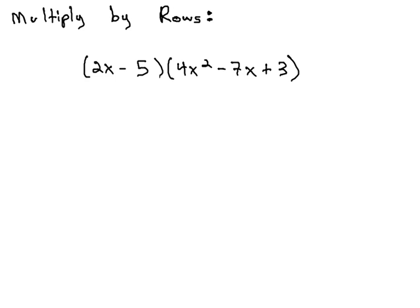The idea behind rows is that we multiply exactly like we multiply in arithmetic. So, let's write it in rows, lining up like terms, and I'm going to put the longer polynomial, 4x squared minus 7x plus 3, on top of the 2x minus 5.